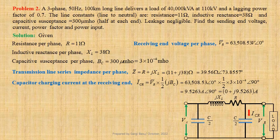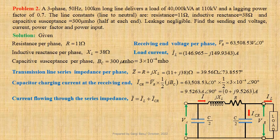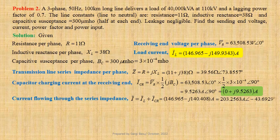Now we shall calculate current flowing through the series impedance. I equals IL plus ICR. We have computed load current IL equals 146.965 minus j149.9343 ampere. Using values, I equals 146.965 minus j140.408 ampere. This may be written in polar form as 203.2563 ampere at an angle minus 43.6929 degrees.